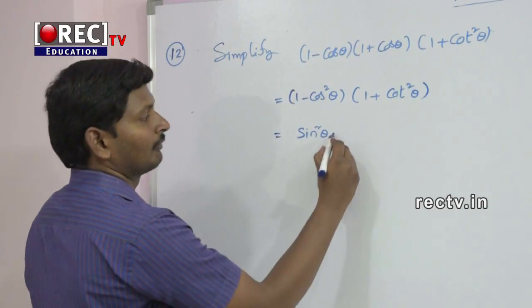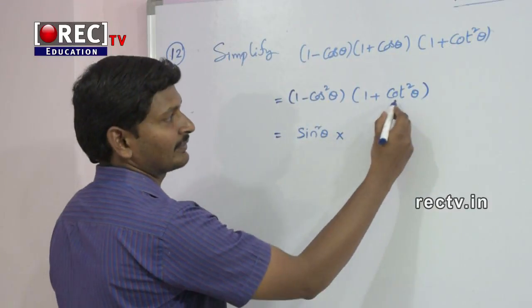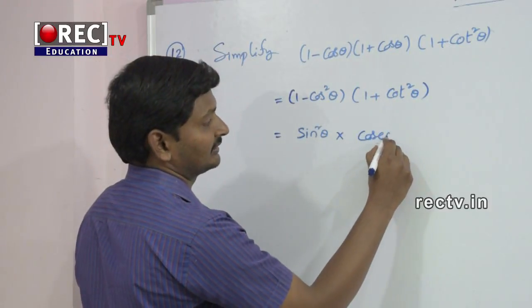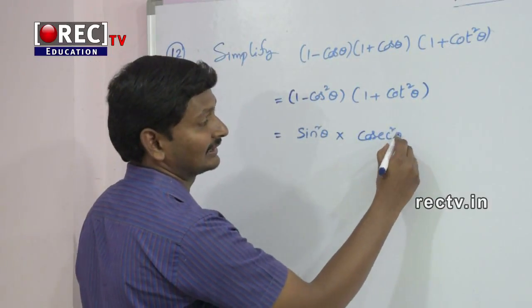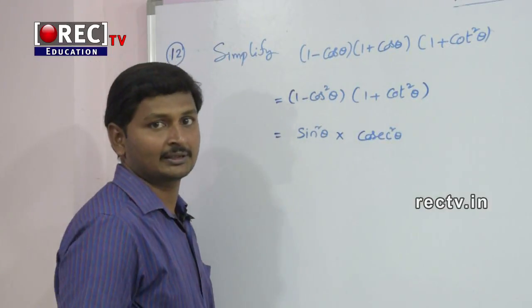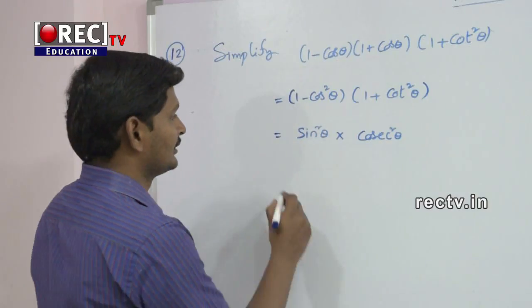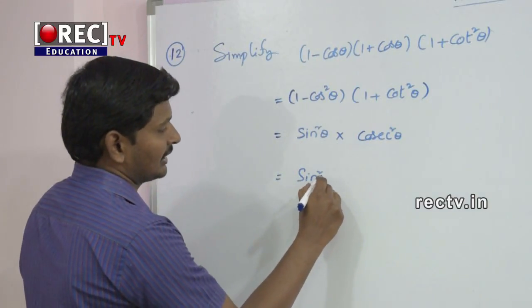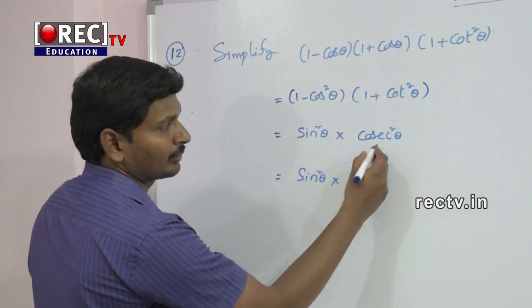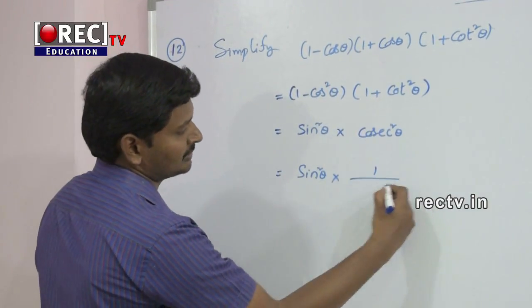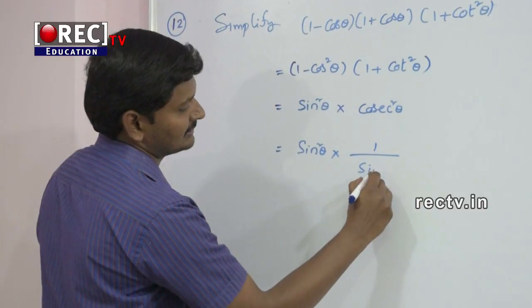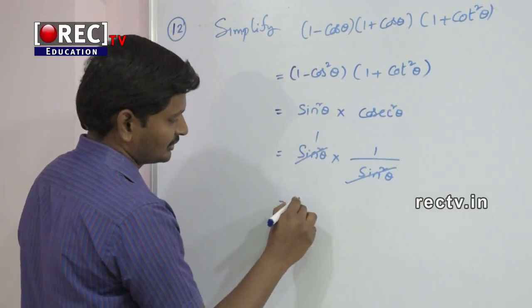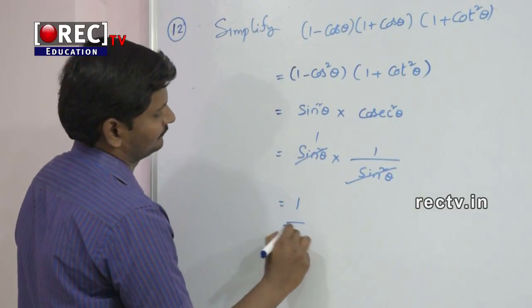1 minus cos squared theta equals sin squared theta from the first trigonometric identity, and 1 plus cot squared theta equals cosec squared theta from the third trigonometric identity. So we have sin squared theta into cosec squared theta, which equals 1.